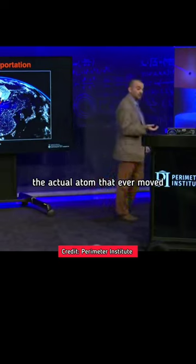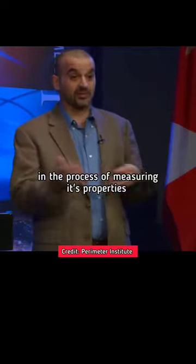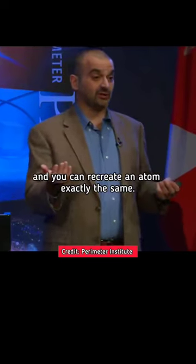So the actual atom never moved. All you do is you take one atom and you measure its exact properties, and in the process of measuring its properties, you actually mess it up and you lose that information. But you can transmit that state to the spacecraft and you can recreate an atom exactly the same.